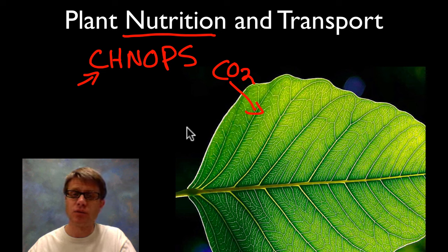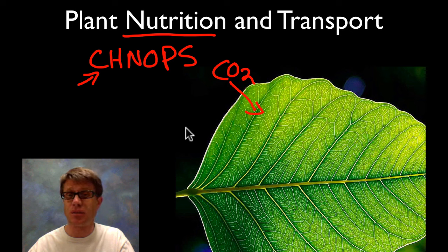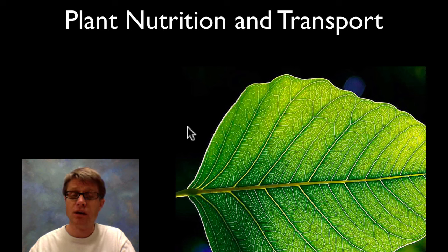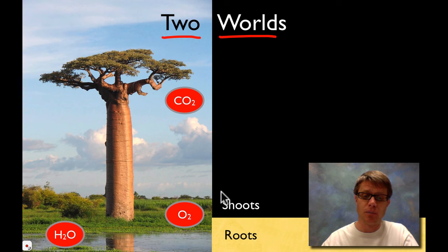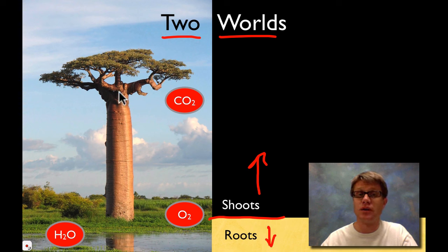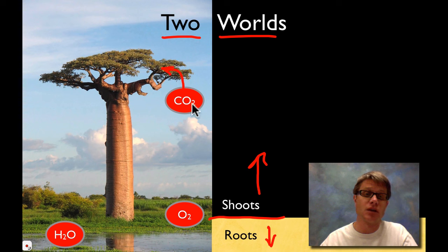How does that differ from animals? Well, we simply eat things like plants, or we eat things that eat plants, and so we get all of those nutrients. So we're kind of talking about the digestive, circulatory, and respiratory systems all in one in relation to plants. Basically, plants live in two worlds: the world above ground — the world of the shoots — and the world below ground — the world of the roots. What they take in through their leaves is carbon dioxide, which they use to make sugars. Those sugars make up the bulk of a plant and are used for energy.